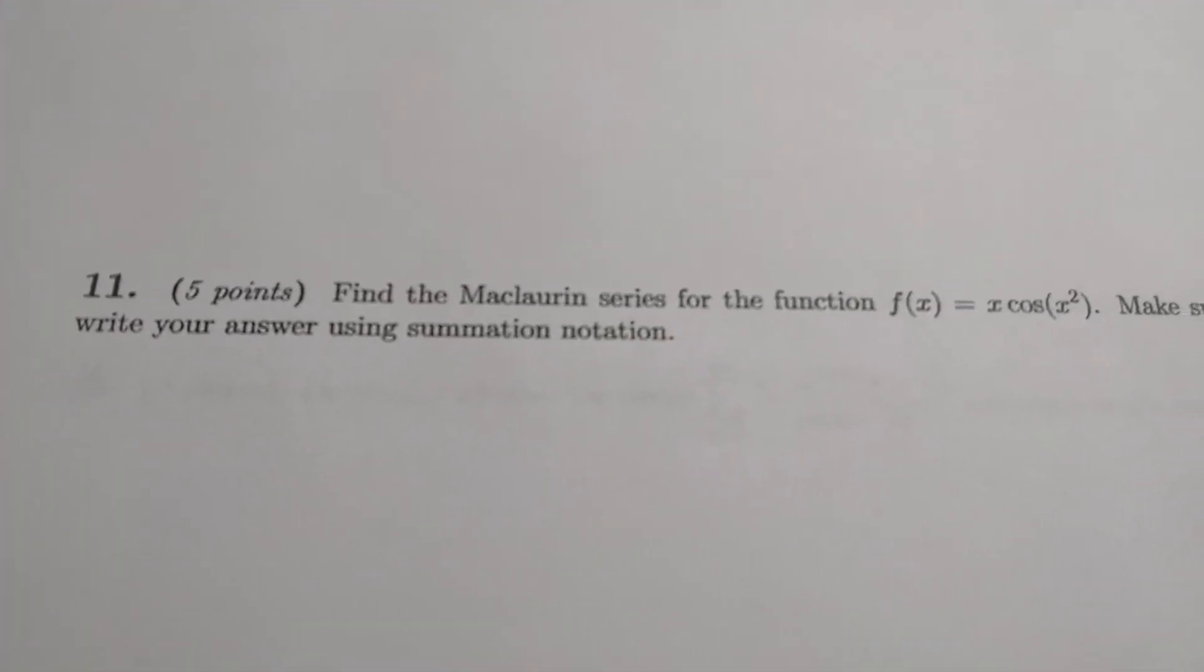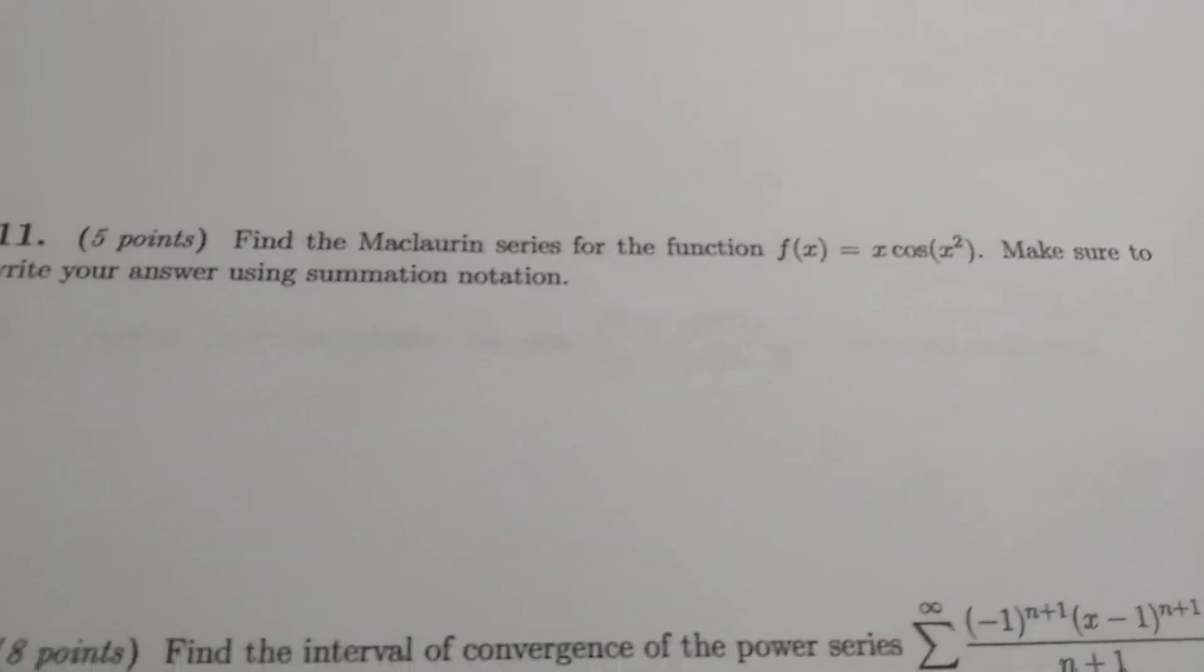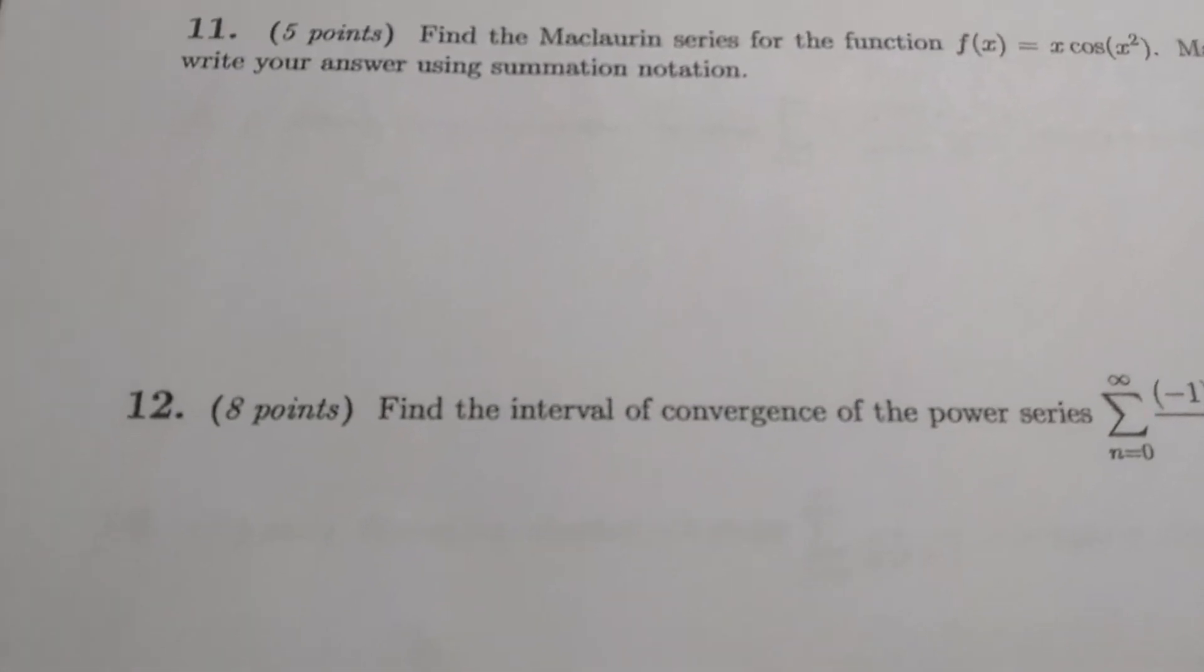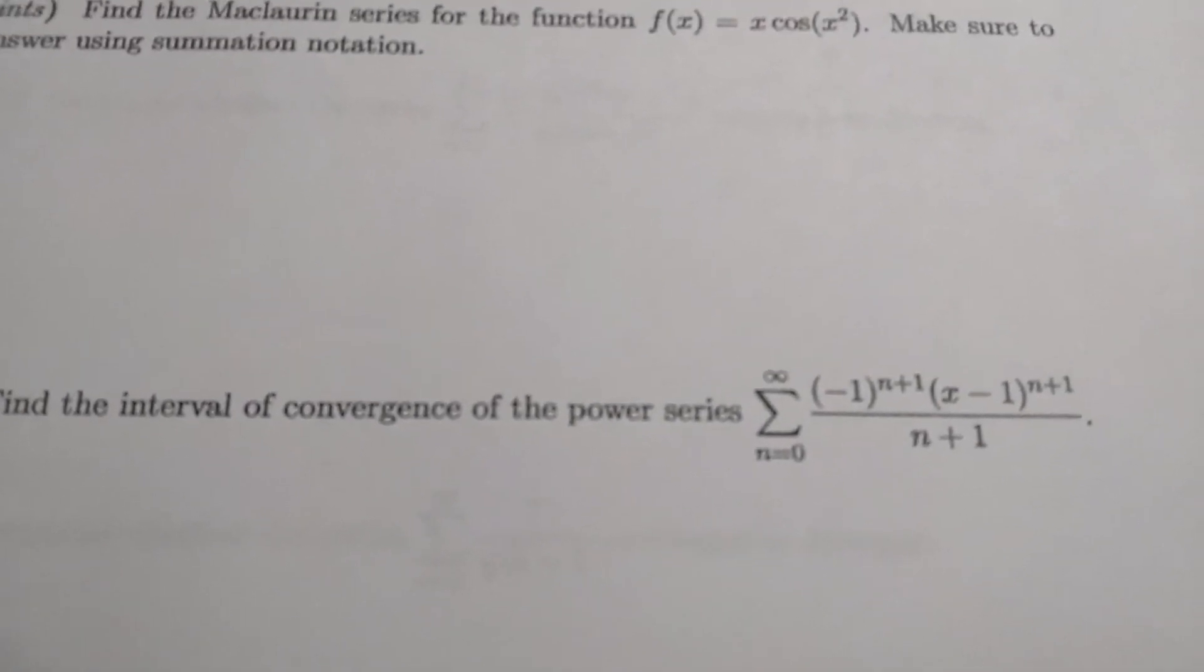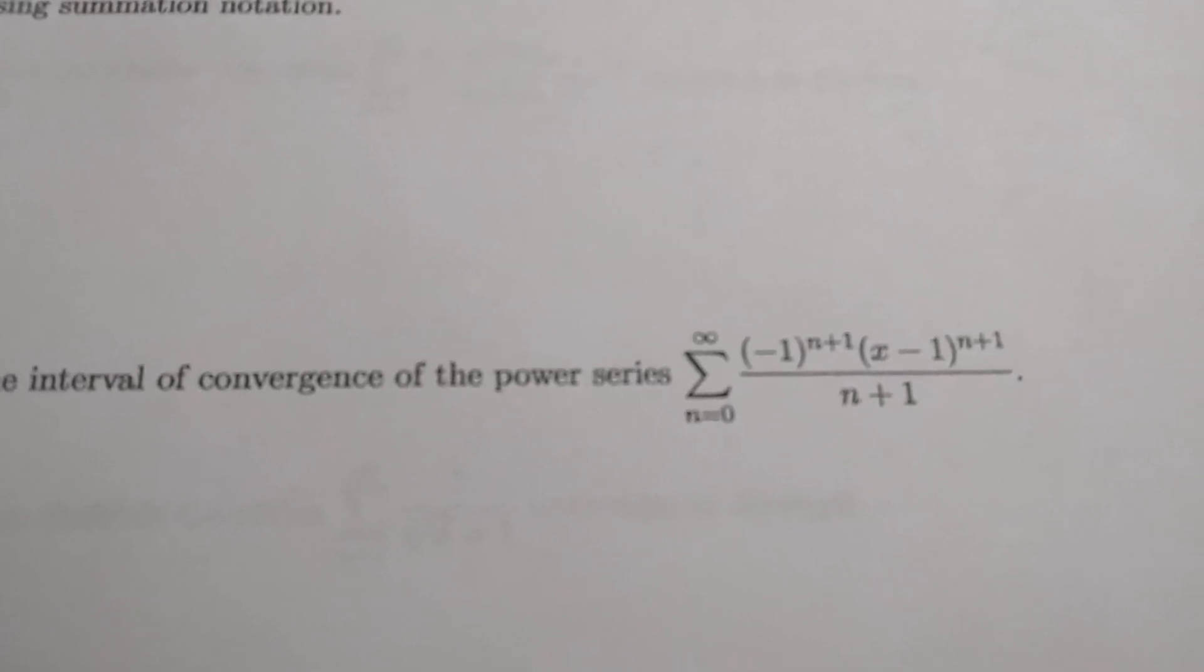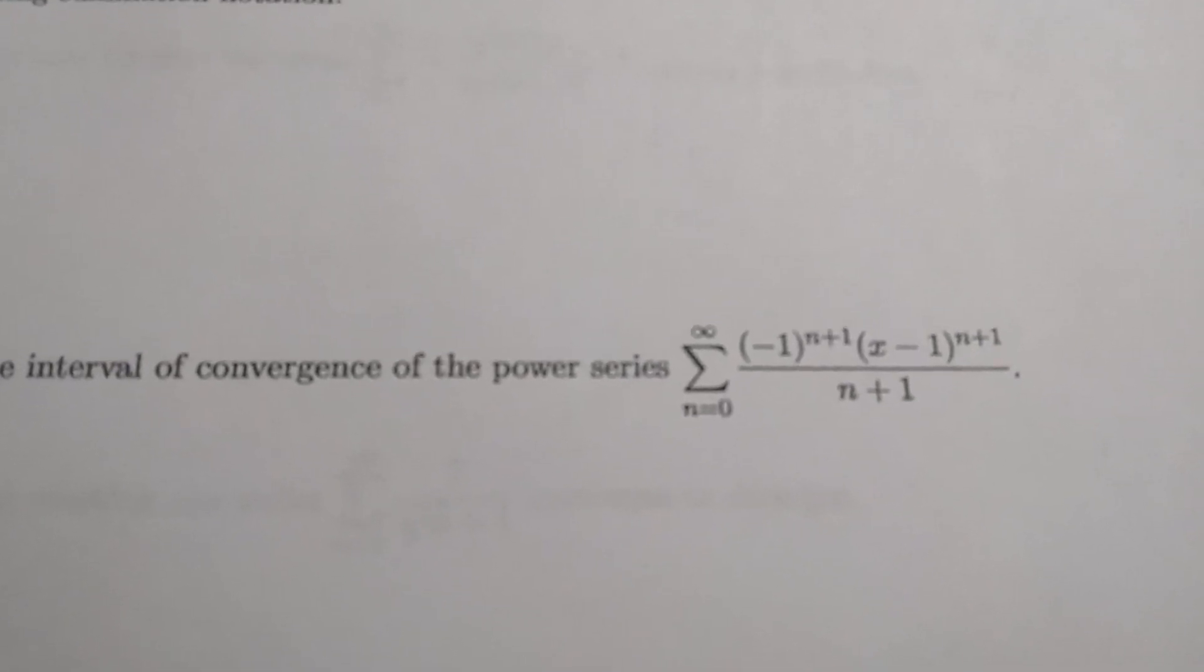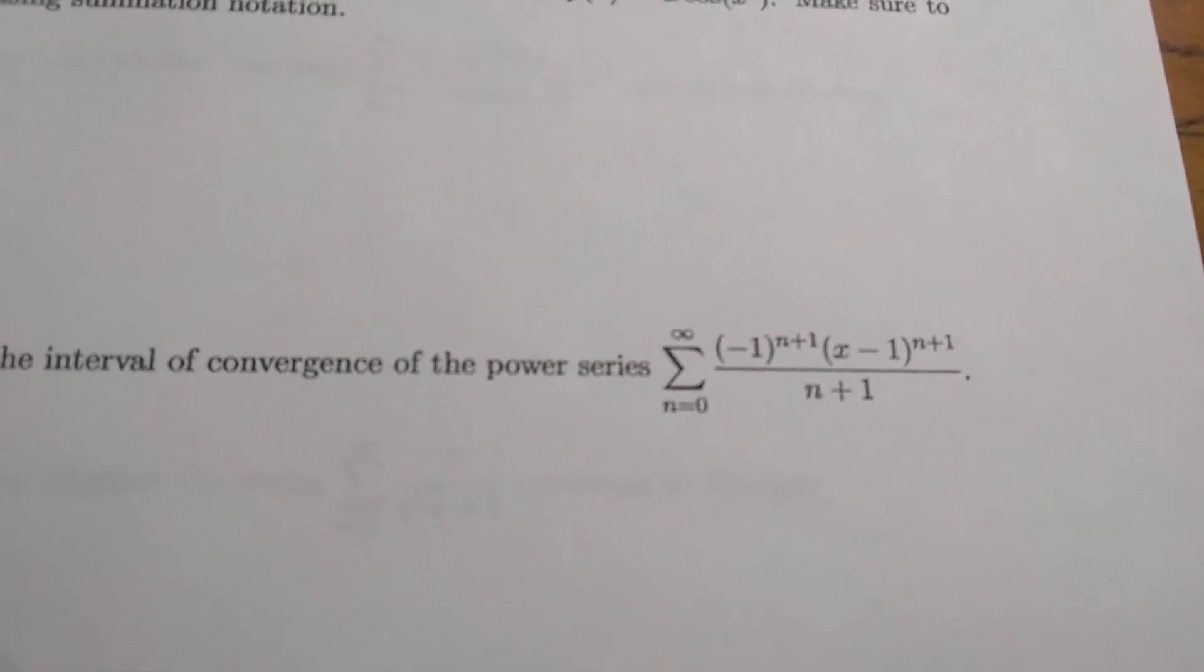Number eleven is a McLaren series for x times cosine of x squared. Really simple. Number twelve is actually really long. So find the interval of convergence of this power series. So you start by using the ratio test. Then you have to check the endpoints and use all of the series tests to check if you have convergence at the endpoints as well. Let's go to the next page.